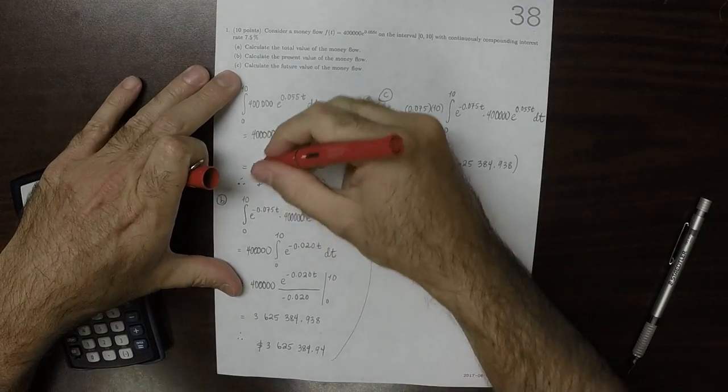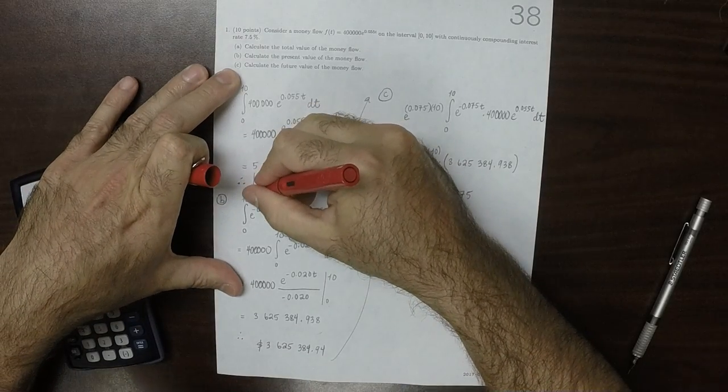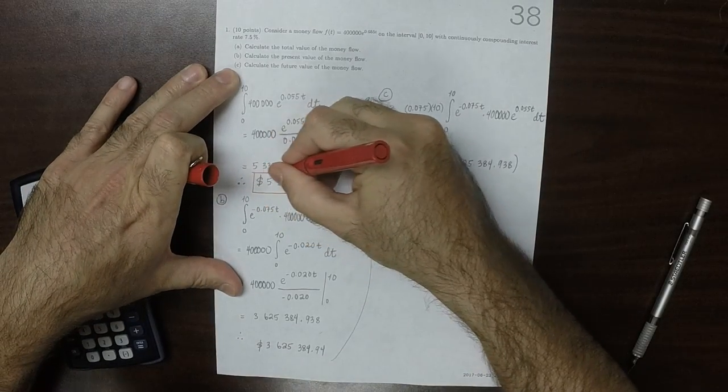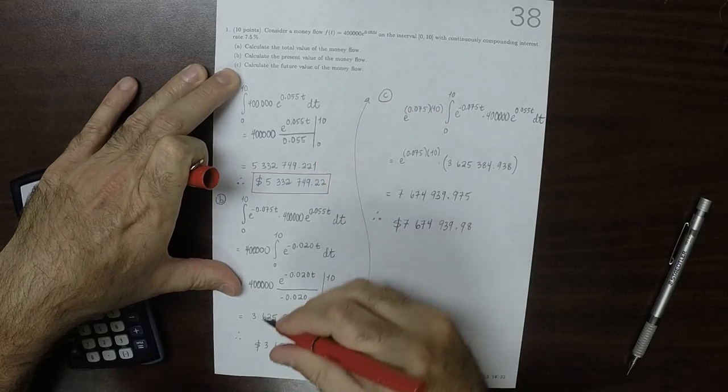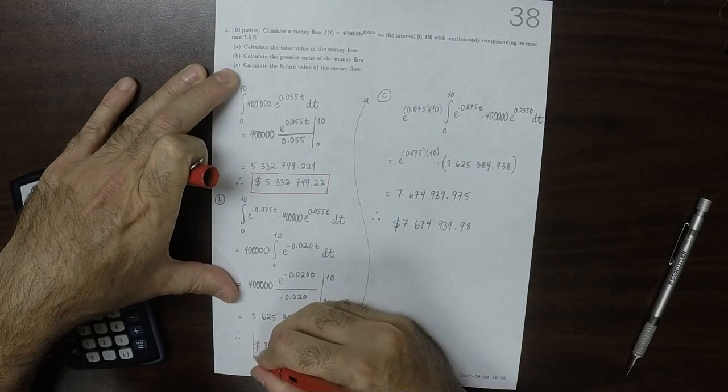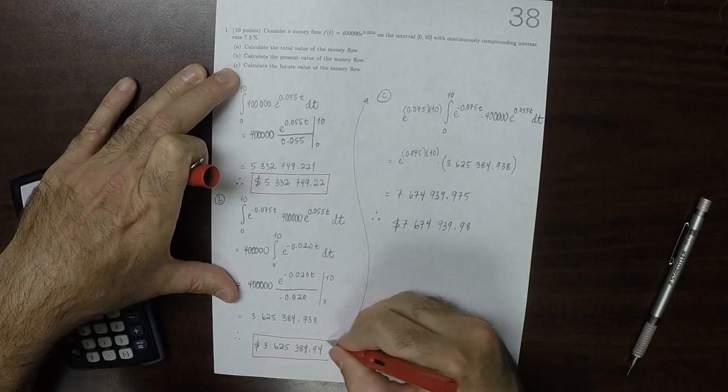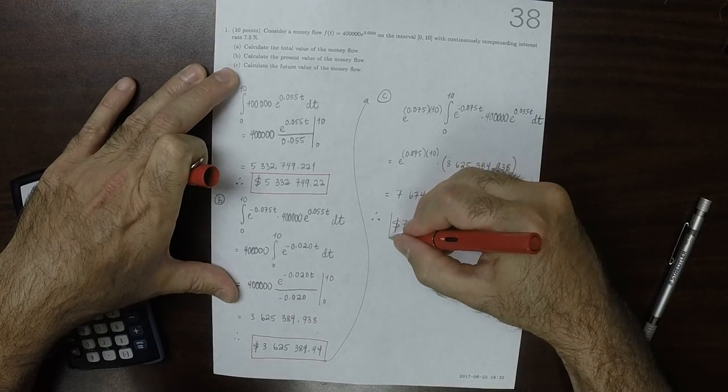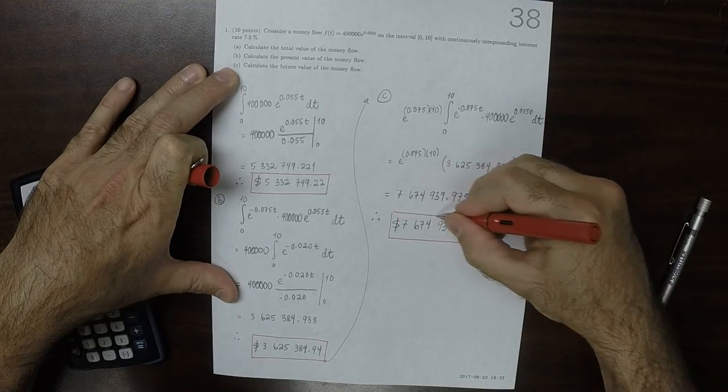So, the answers are this $5,000,000 number, this $3,000,000 number, and this $7,000,000 number.